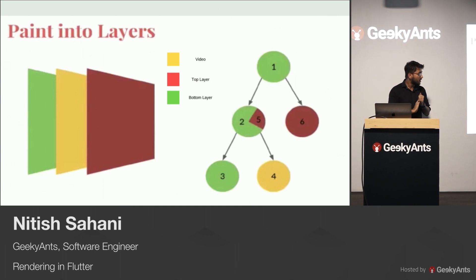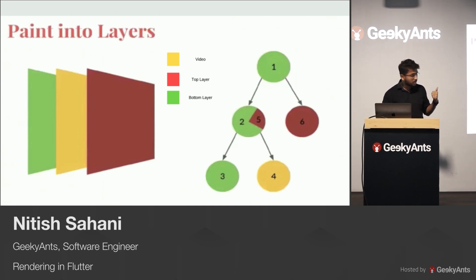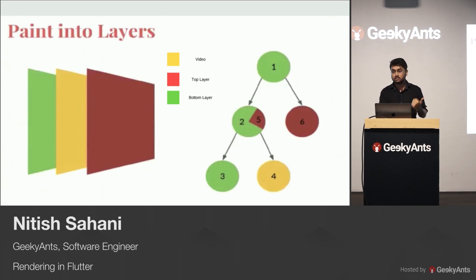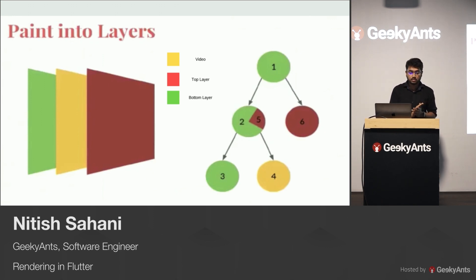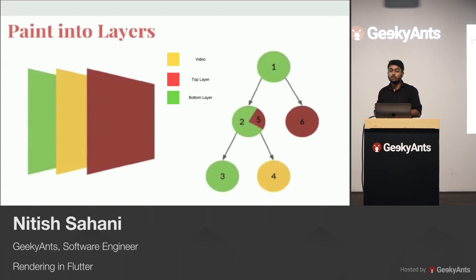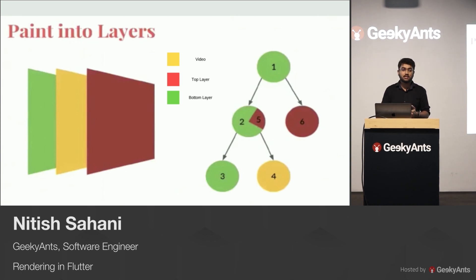During the paint phase, we walk the tree in depth order and paint into these layers. The green bubbles paint into the green layer. Number four — the video widget — needs to be composited in paint order correctly, so it gets painted in its own layer after painting the background green colors. Everything that comes after number four in paint order gets drawn into the red layer. Interestingly, a single widget can have both green and red — meaning it painted the background for widgets two, three, and four first, then on the way up decided to paint more things.